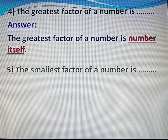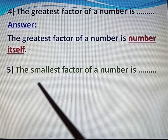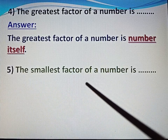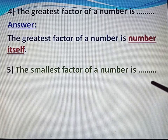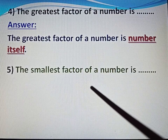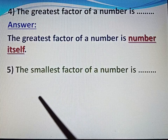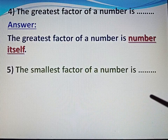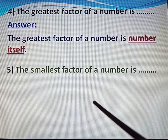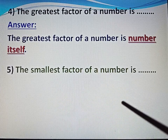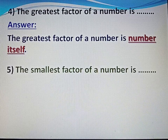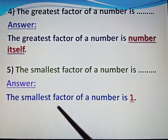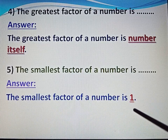Question number 5. The smallest factor of a number is dash. The smallest factor of a number is 1. For example, the factors of 4 are 1, 2 and 4, and the smallest is 1. So the smallest factor of a number is 1.